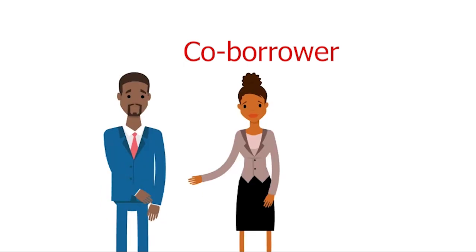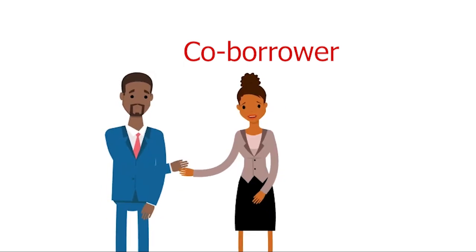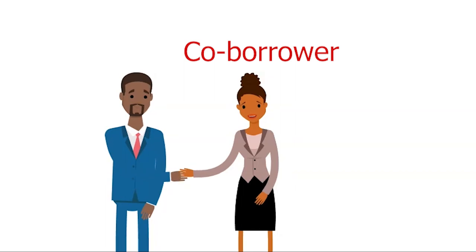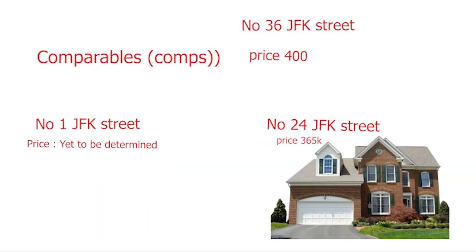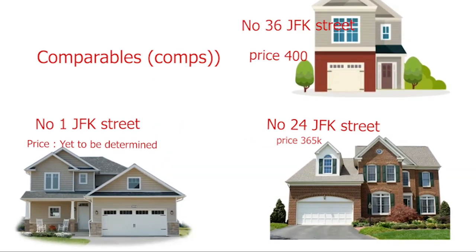Co-borrower: an additional person who applies and shares liability for repayment of a loan with you and is fully obligated under the terms of the loan. Collateral: something of value, such as a car or a home, that is pledged as security for the repayment of a loan. The borrower usually agrees to forfeit such asset if the loan is not repaid. Comparable, or comps: recently sold similar homes within the same location as the home you are looking to buy, used to find the fair value of your target home.